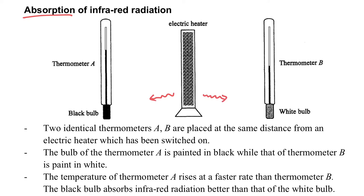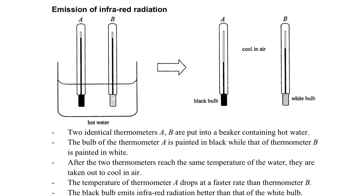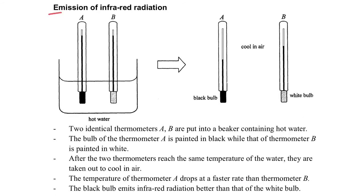Firstly, about the absorption of infrared radiation. We have a heater in the middle and on one side we have a thermometer with a blackened bulb and on the other side we have a thermometer with a whitened bulb. We can observe that the black bulb's temperature will increase more compared with the white one at the same time. So we know that the black bulb is a better absorber of radiation.